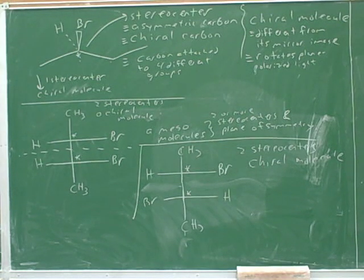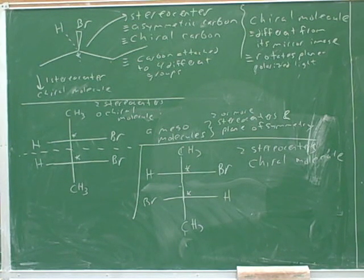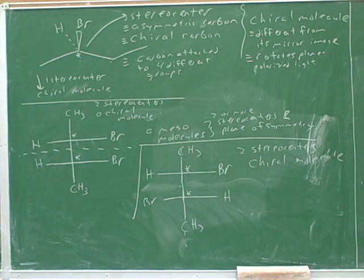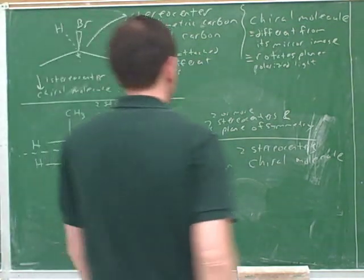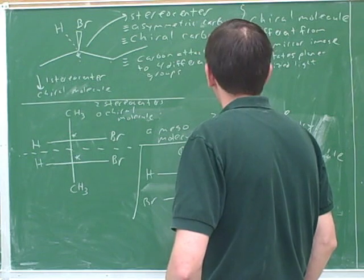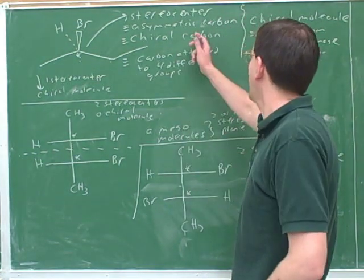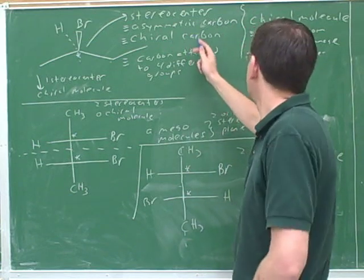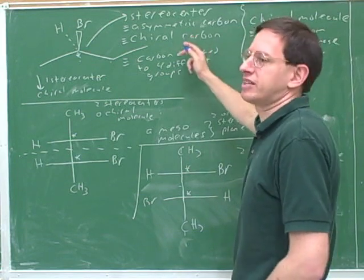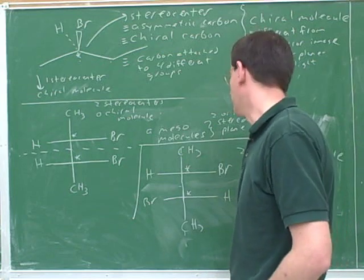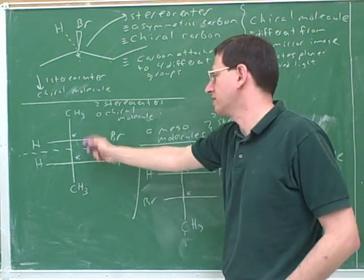Here's a stereochemistry handout. We covered some of the material on page two about how to tell whether something is meso. First, you check for stereocenters — if there are no stereocenters, then you know the molecule is achiral. But if it does have stereocenters, it could still be achiral if there's a plane of symmetry, which would make it meso. Only if there are stereocenters and no plane of symmetry would we know the molecule is chiral. You need chiral carbons before you can be a chiral molecule, but even with chiral carbons, they might cancel each other out.